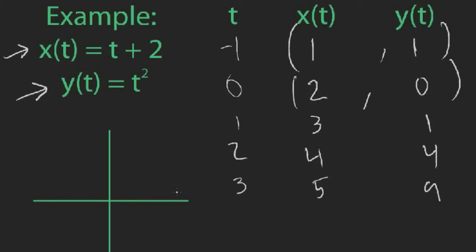Now we can actually plot these points x comma y on our axes. So let's start with (1,1), (2,0) is like here, (3,1) about there, (4,4) is a bit higher up there, and (5,9) is probably much higher like up here. What we get is a parabola.